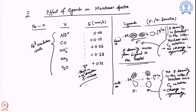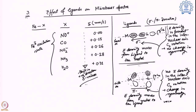In pi interaction, the metal actually gives electron density back to the ligand. Electron density moves from metal to the ligand. This happens because the ligand mostly uses its vacant pi* or p-symmetric orbitals for this interaction. There should be a vacancy present for at least one electron on the ligand side, so that the metal can place its electron there through this pi interaction.